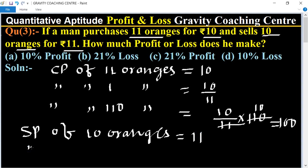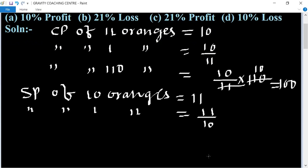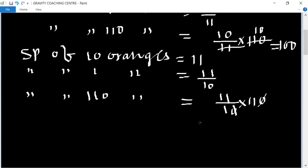So SP of one orange equal to 11 upon 10. So SP of 110 oranges equals 11 upon 10 multiply 110. So zeros cancel, equal to 121. So 121 is the selling price.